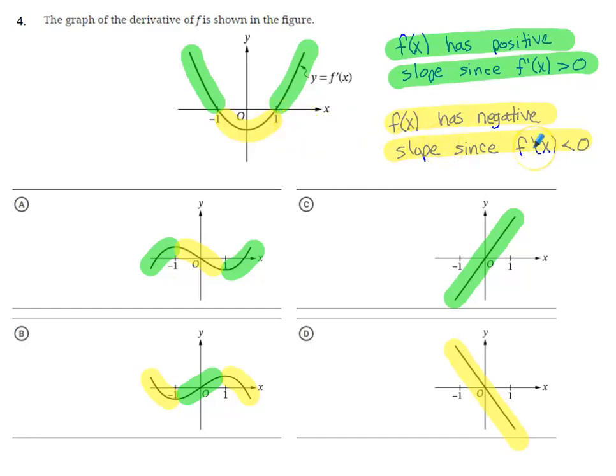If the graph of f prime is negative, if the derivative value is negative, the slope of f has to be negative. So on these answer options down here, I've got the positive slopes highlighted in green and I've got the negative slopes highlighted in yellow. I need to pick the option that has the same color highlights on corresponding x values to what I have up here.